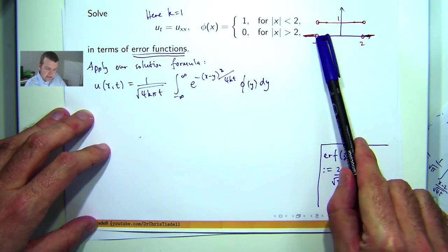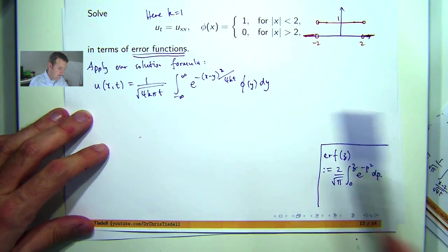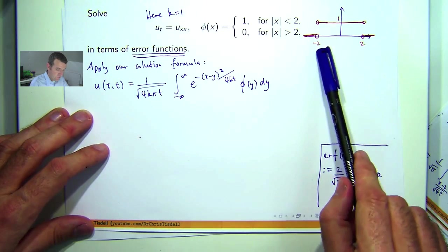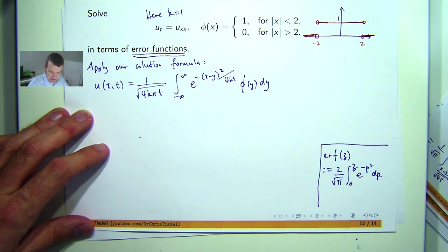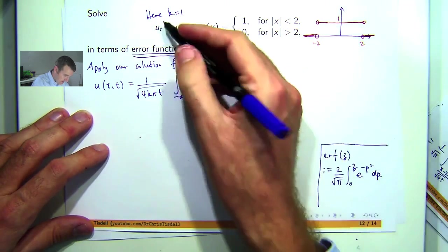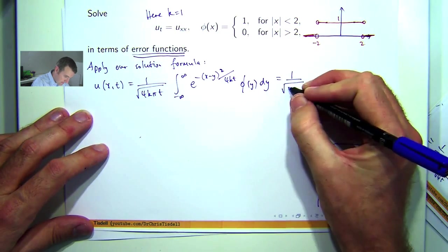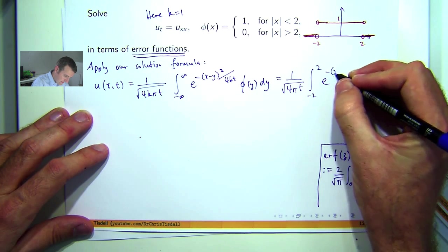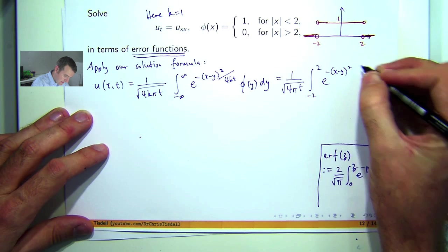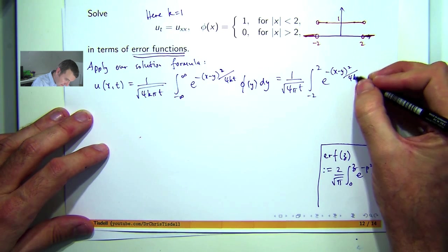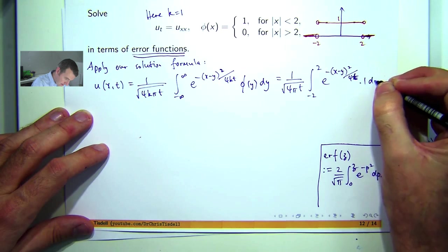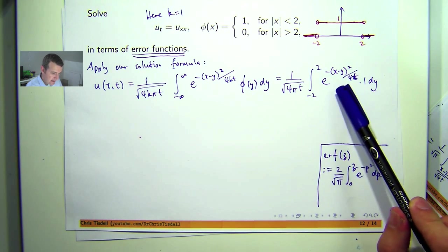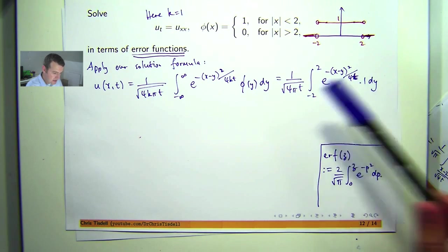Now like I said just integrate from negative infinity to negative 2, then negative 2 to 2, and 2 off to positive infinity. And the only non-zero integrand in here will be the interval minus 2 to positive 2. So remember k equals 1, 4t. So now we're faced with trying to write this integral in terms of positive error functions.